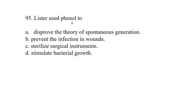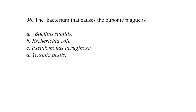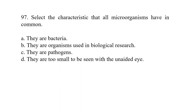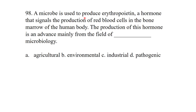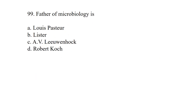Lister used phenol to prevent infection in wounds. The bacterium that causes bubonic plague is Yersinia pestis. All microorganisms are too small to be seen with the unaided eye. The microbe used to produce erythropoietin — a hormone that signals red blood cell production in bone marrow — is from the field of industrial microbiology. The father of microbiology is Antonie van Leeuwenhoek.